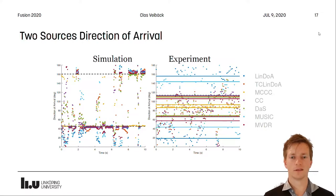We evaluated these methods in both simulations and experiments. And here we look at the direction of arrival of two sources. On the left here we have the simulation and we see that all methods perform quite well, especially when only one of the sound sources is active.